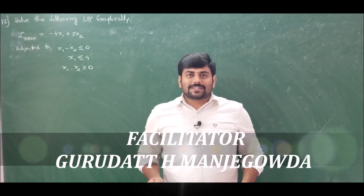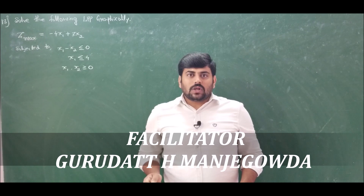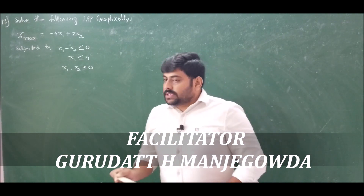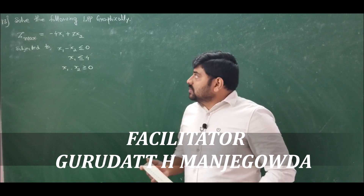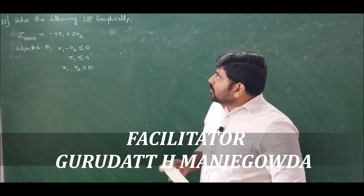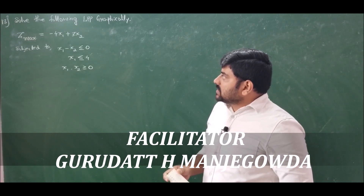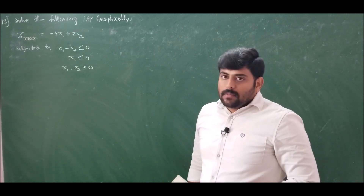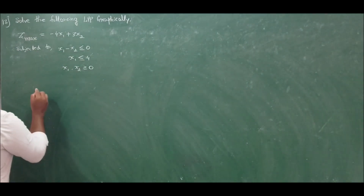Welcome, dear learners, to this course on operations research. In module 1, we were discussing the formulation and graphical solution of linear programming problems. This is problem number 13, the final problem of our discussion on graphical solution for LPP: solve graphically z max = -4x1 + 3x2, subject to x1 - x2 ≤ 0, x1 ≤ 4, and x1, x2 ≥ 0.